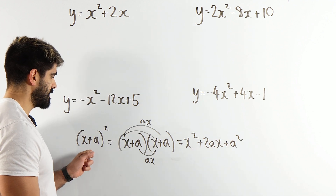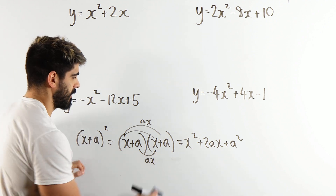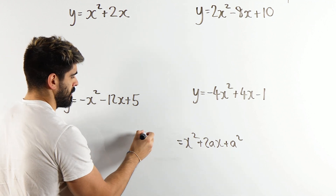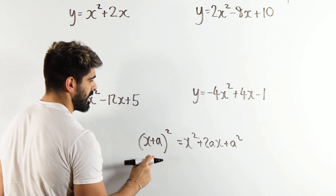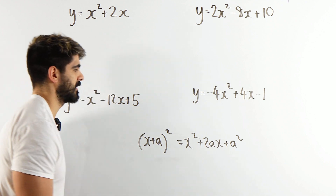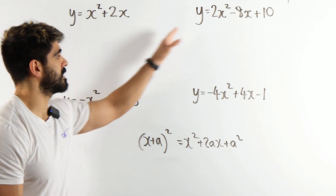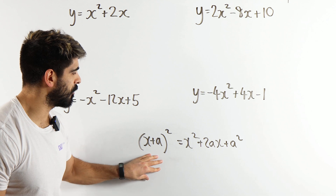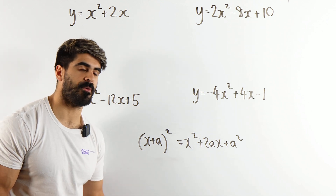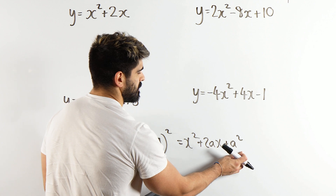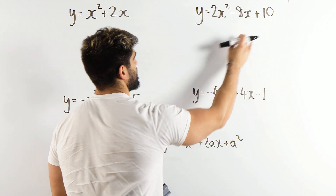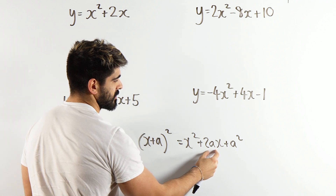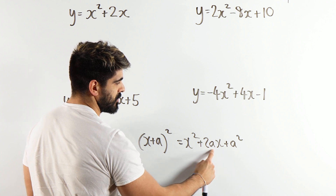So this expands to x squared plus 2ax plus a squared. Let's write that again: x plus a squared is all of this. Now this is the expanded form. We want to rewrite it in the completed square form. Well, this a squared is not necessarily the constant at the end — that's something else. It's all about what's going on in front of x — this is dependent on that coefficient.